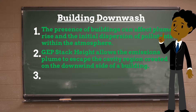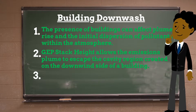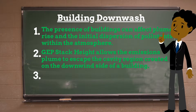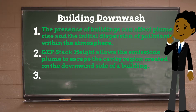In order to avoid excessive downwind concentrations due to building downwash effects, the height of the stack must be tall enough to allow the emissions plume to escape the cavity region created on the downwind side of a building complex — a height referred to as good engineering practice stack height. According to the Clean Air Act, good engineering practice stack height is defined as the height necessary to ensure that emissions from a stack do not result in excessive concentrations of any air pollutants in the immediate vicinity of a source as a result of atmospheric downwash, eddies or wakes created by the source itself, nearby structures, or nearby terrain obstacles.